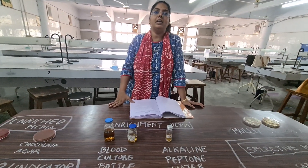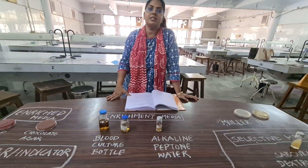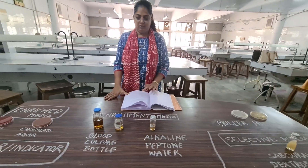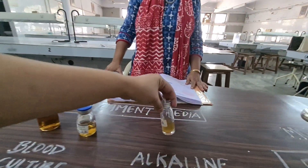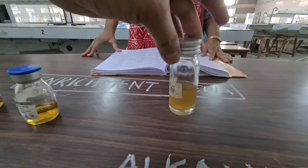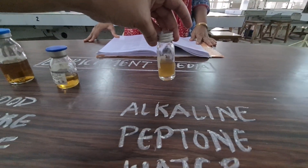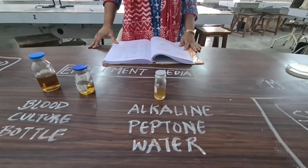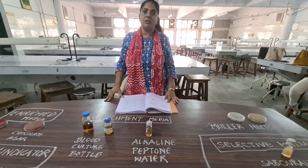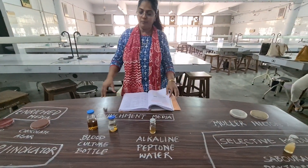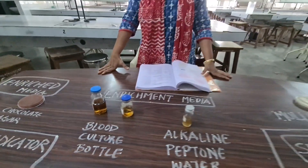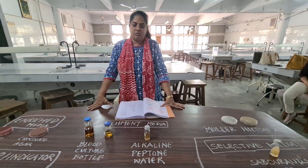Now, enrichment media. Enrichment media are liquid media that contain substances which promote or enhance the growth of one type of organism over others. Like alkaline peptone water — the pH is alkaline, which favors the growth of Vibrio cholerae. Selenite F broth is used for isolation of Salmonella species. Thioglycollate broth is used for isolation of Salmonella species from blood. This blood culture bottle is used for isolation of organisms from blood.